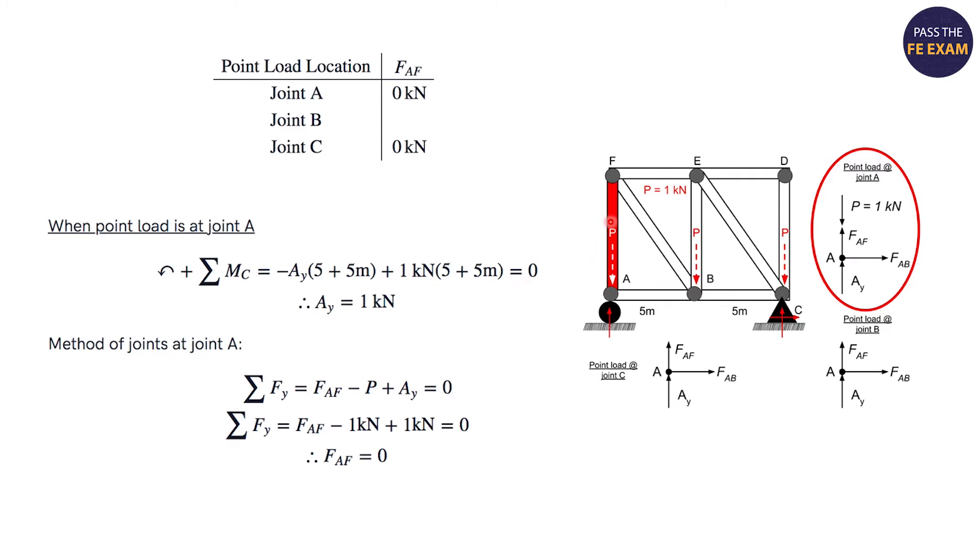Then you're adding the one, the point load, which is one. And then your distances are 10 for both, because they're both 10 meters from the point of the moment that's going around. So you can solve it out. AY equals one kilonewton.